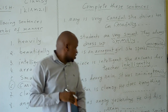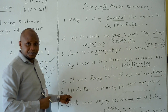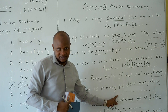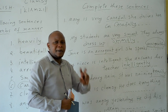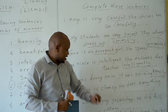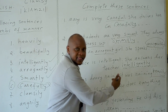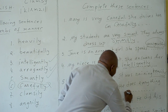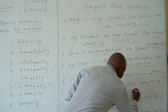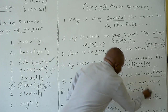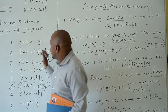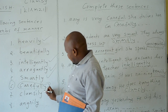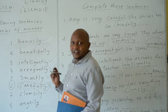Number six: 'His father is clumsy. He does everything clumsily.' Because we have the adjective clumsy, the adverb of manner is clumsily.